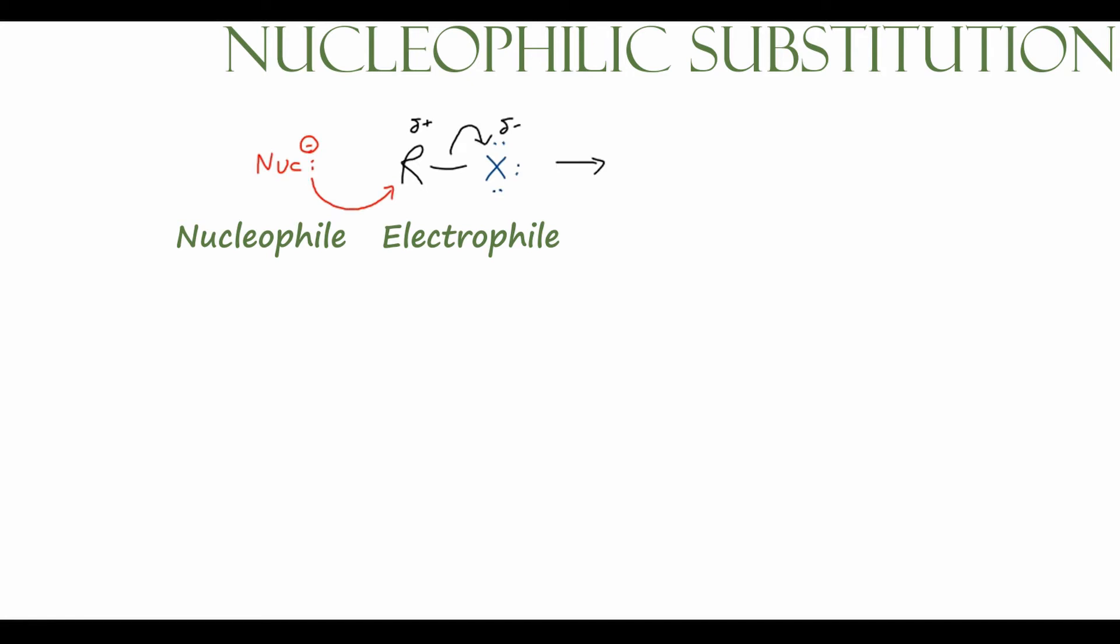That will produce two products. The first of which is R-Nuc, so our haloalkane has had that halogen replaced with the nucleophile. And then we'll also have X minus, so whatever that halogen is now has a lone pair, an extra lone pair, which will make it negatively charged. An important thing to keep track of is that we've conserved charge on both sides. So we have one negative charge on the left side in our nucleophile and one negative charge on the right side in our halogen. And that's what we call our leaving group, because it's left the substrate.